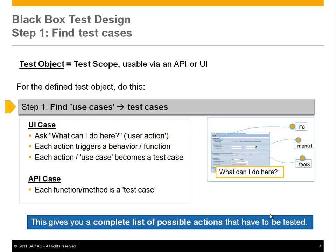For an API it's actually even simpler, because each function or method is a test case. From a test design perspective it's an atomic call — you put something in and in the end you check if it was correct. This approach of looking at what can I do here and what are the test cases gives you a complete list of possible actions that have to be tested.